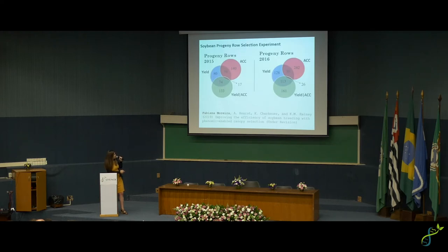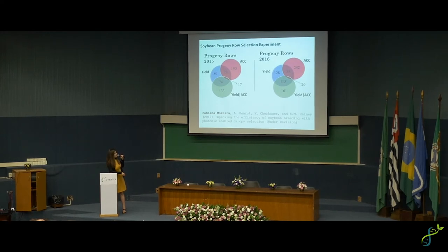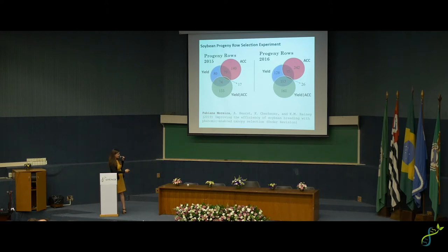Moving on to another of Fabiana's experiments: a selection experiment started in 2015 using just canopy coverage data after getting good results from Elaine Carr's study. We went into my breeding program into our progeny rows — the first phase of selection in soybean breeding. It's virtually at random; you can select visually or collect yield data on small plots that aren't very good quality. Soybean doesn't produce many seeds in early generations, so replication is very limited.